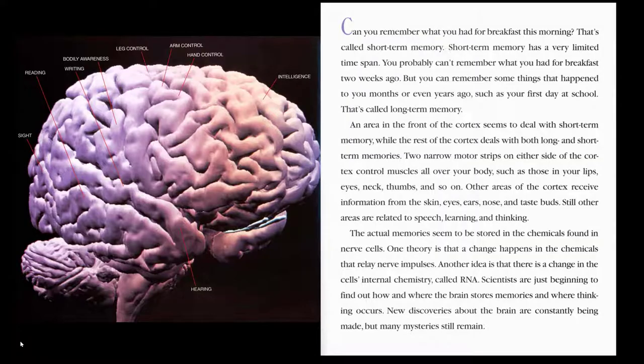Can you remember what you had for breakfast this morning? That's called short-term memory. Short-term memory has a very limited time span. You probably can't remember what you had for breakfast two weeks ago, but you can remember some things that happened to you months or even years ago, such as your first day at school. That's called long-term memory. An area in the front of the cortex seems to deal with short-term memory, while the rest of the cortex deals with both long and short-term memories.